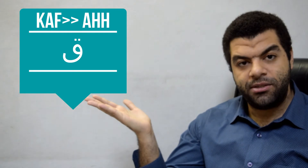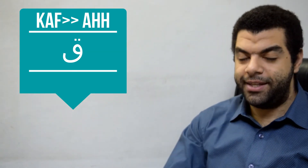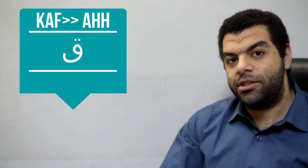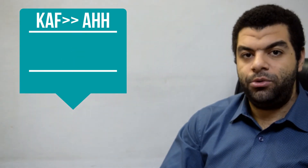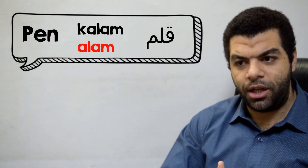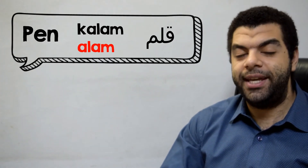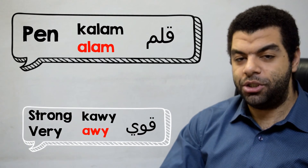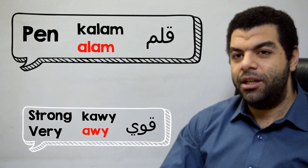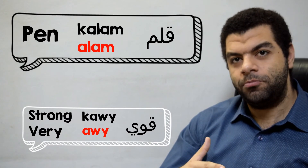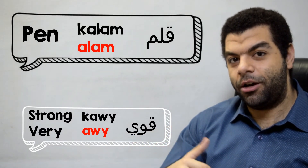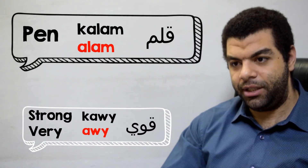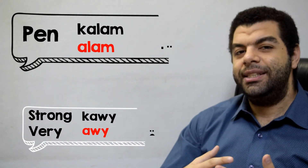The final letter is ق (qaf), which is also kind of confusing because it depends on the word. This is a sound that doesn't exist in English either. This letter is pronounced like a glottal stop or 'a' sound in Egyptian Arabic. For example, a pen would be 'alam' — we say 'alam.' And 'qawi,' which means 'strong' — in Egyptian Arabic, we say 'awi.' But if you want to say someone is 'very strong,' you say 'qawi awi.' So 'qawi' means 'strong' and the glottal form means 'very.'